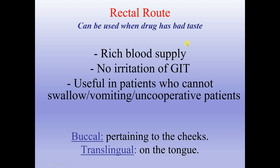Rectal route can be used when the drug has a bad taste. Features include rich blood supply, no irritation of the GIT, and it is useful in patients who cannot swallow, or who are vomiting or uncooperative. Also notable: buccal administration pertains to the cheeks, and translingual is on the tongue.